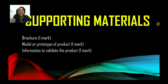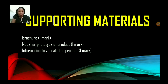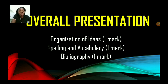Finally, we're at supporting materials. You're supposed to create a brochure. Your brochure may include a picture of your product, service, or activity, general information about your product, and possibly the location where your product will be. Then there's the model or prototype — if possible, you're going to make the product and take a picture of it. If it's an actual restaurant, you may have to do something like a floor plan or a menu. The prototype and information from the brochure will validate your product and earn you one mark. Overall presentation and organization of your ideas is one mark, spelling and vocabulary is one mark, and your bibliography is another one mark. It is very important to cite your sources to avoid plagiarism.